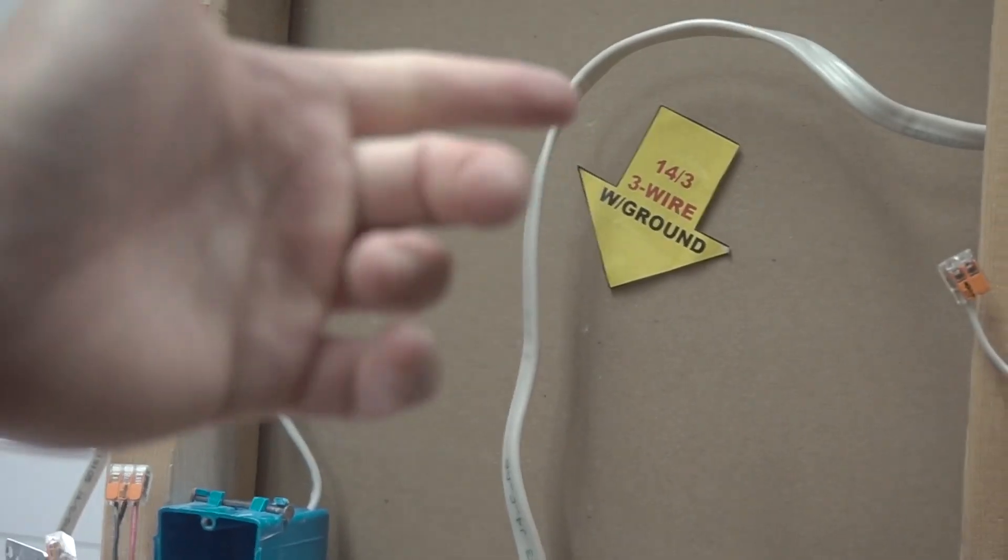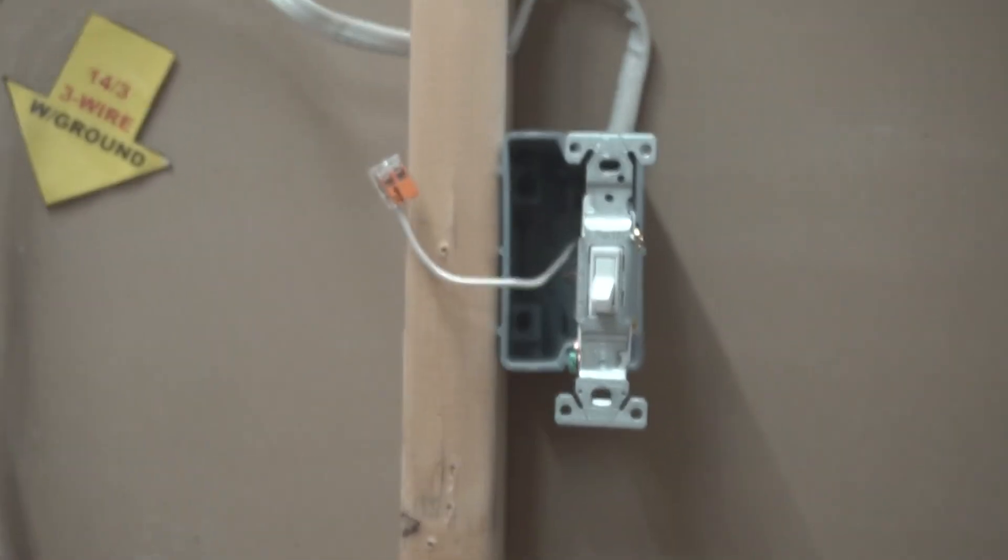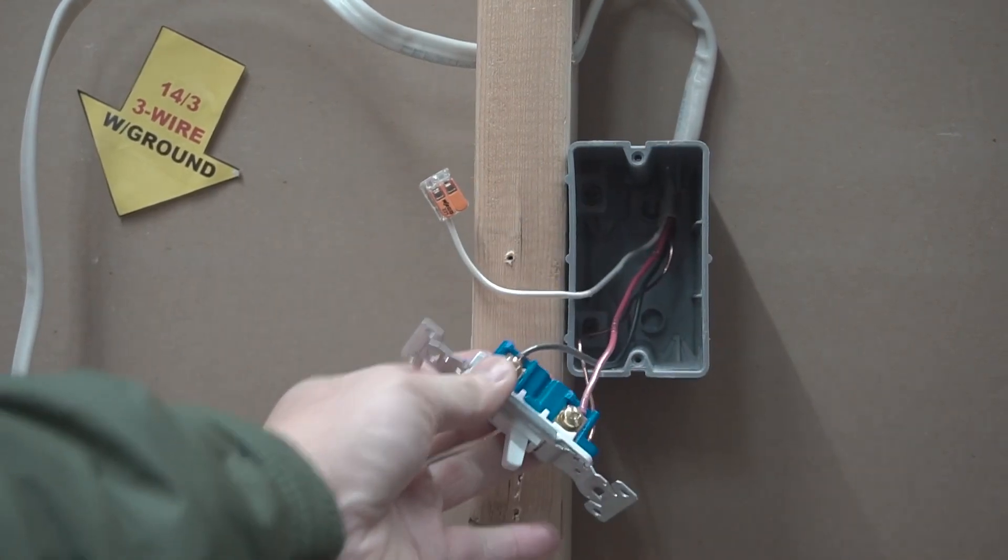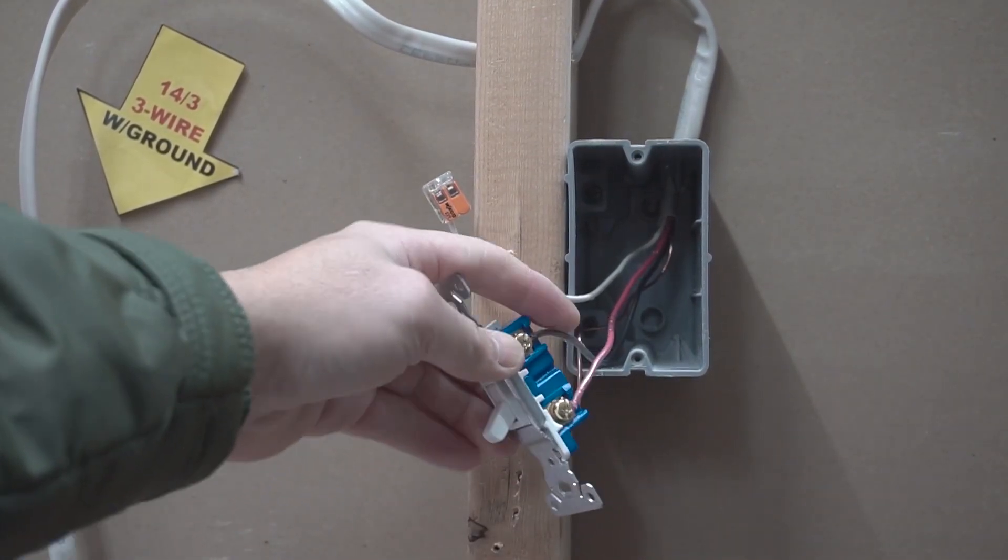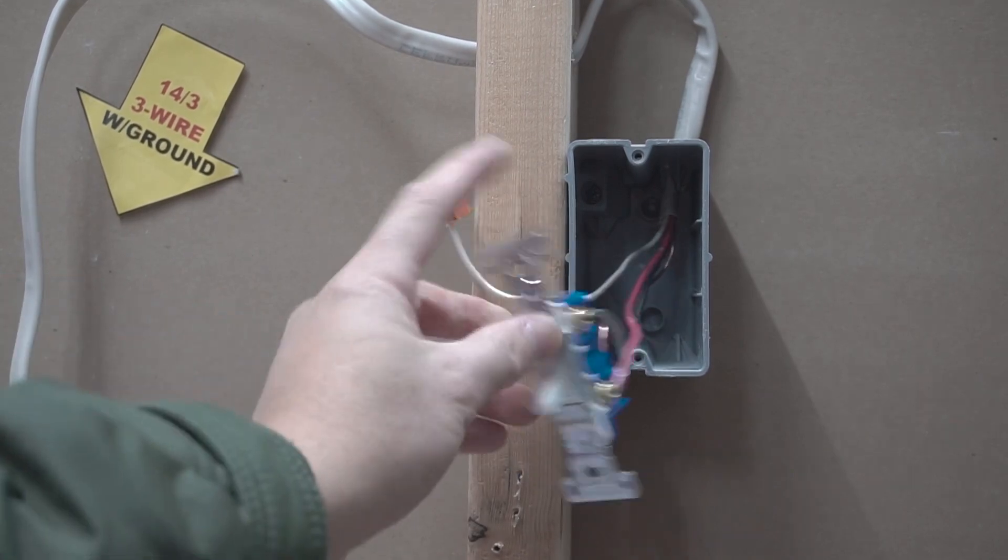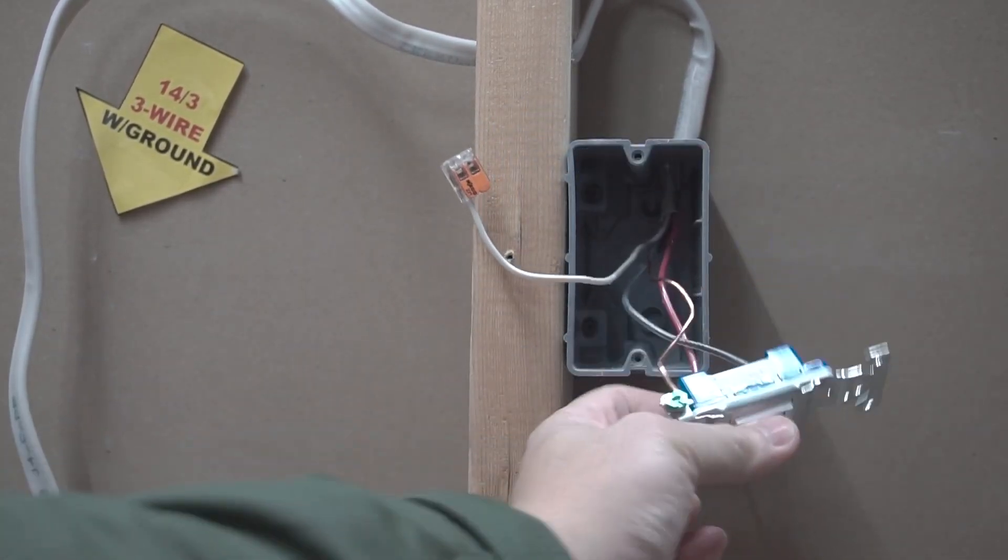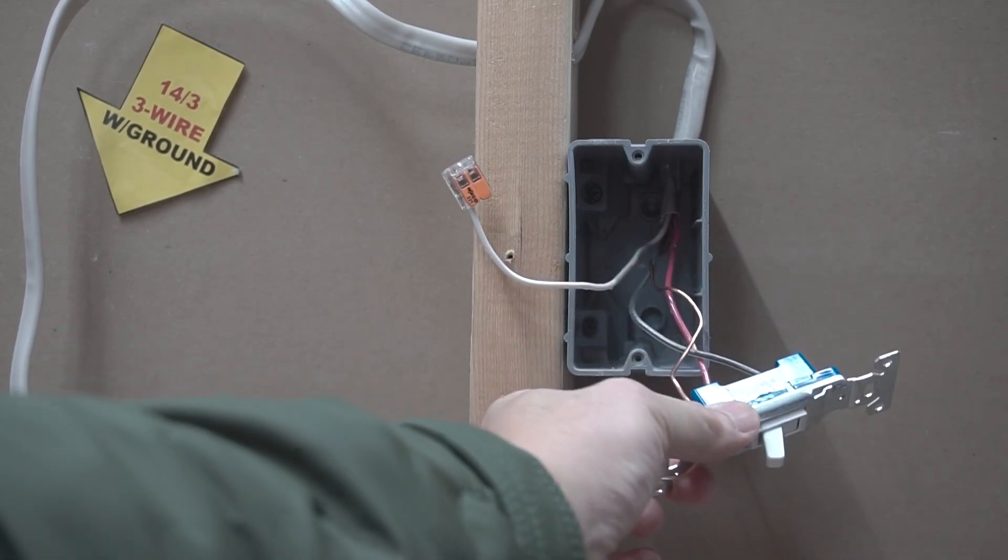I'm going to follow this 14-3 and go to our last J-Box. Now this is fairly easy right here. We're just going to connect the black on the top hot terminal, connect the red on the bottom hot terminal, and then we are connecting the ground on the ground terminal.